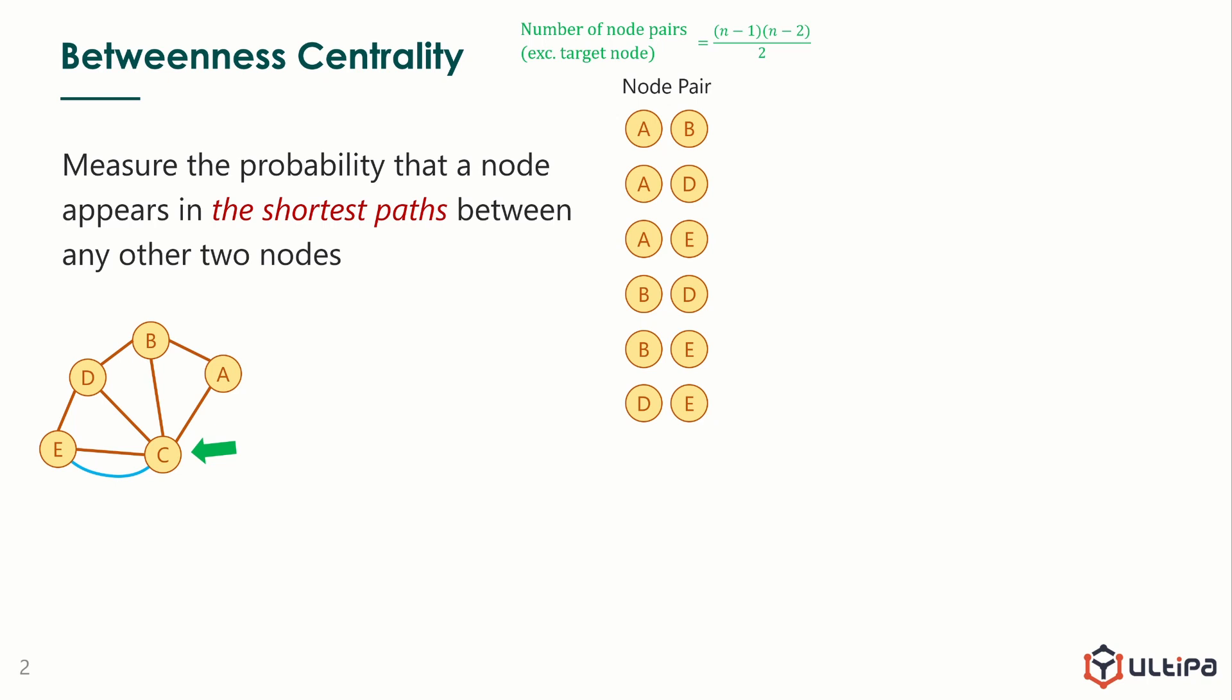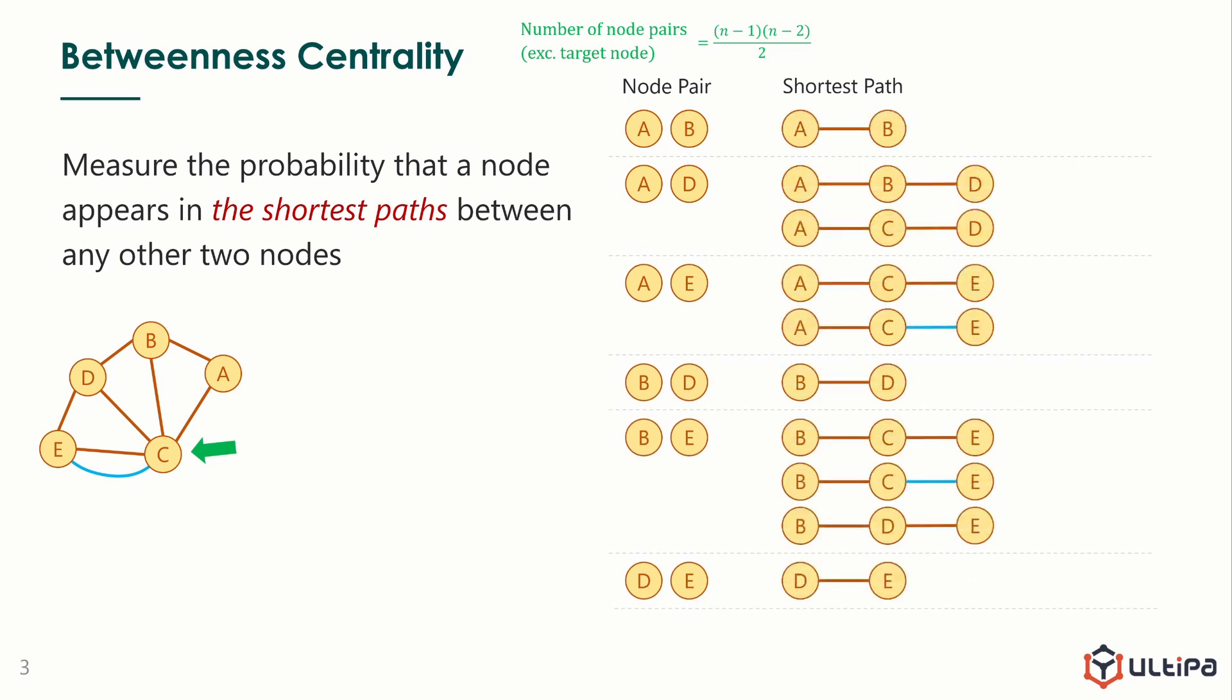Next, we will write the shortest path for each node pair. You must have noticed that some node pairs have more than one shortest path. These are of the same distance but go through different nodes or edges.